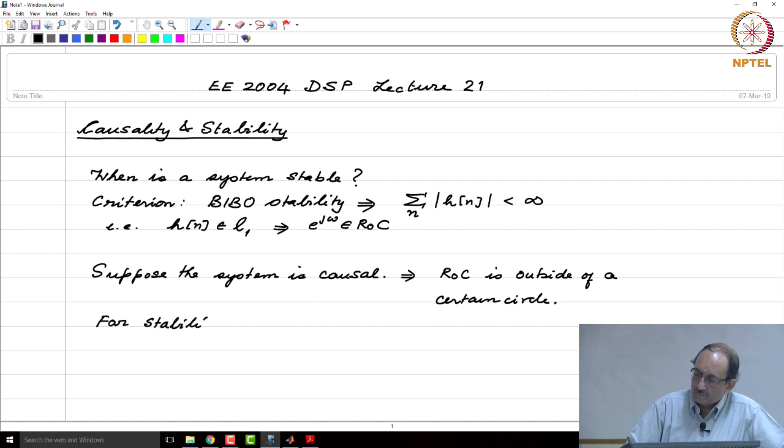For stability, we require that e to the j omega must belong to the ROC. If you put these two facts together, namely ROC is outside of a certain circle when the system is causal and for stability this ROC must contain the unit circle.